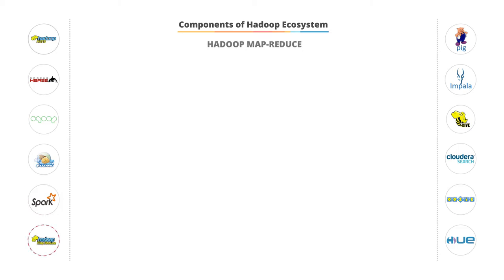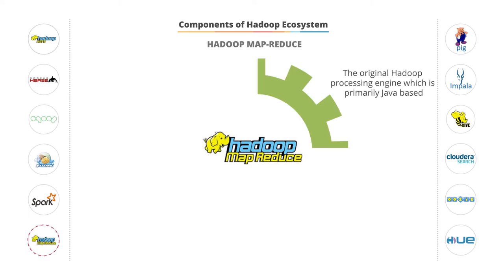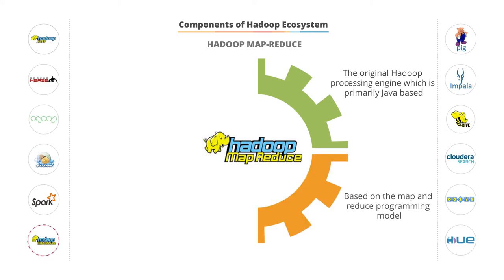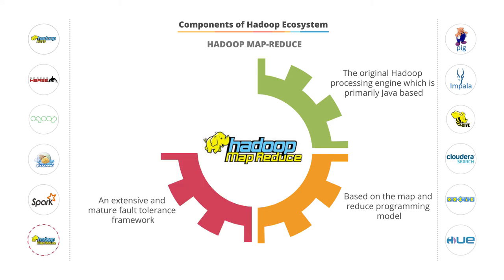Hadoop MapReduce is the other framework that processes data. It is the original Hadoop processing engine, which is primarily Java-based. It is based on the Map and Reduce programming model. Many tools, such as Hive and Pig, are built on top of the MapReduce model. It is an extensive and very mature, fault-tolerant, built-in-to-the-framework tool.